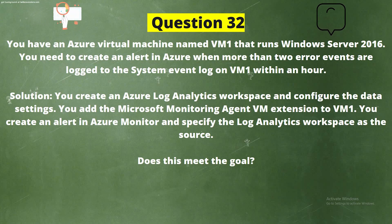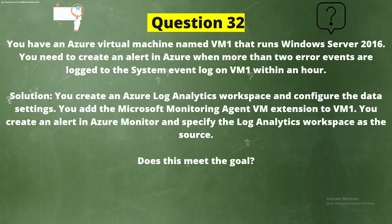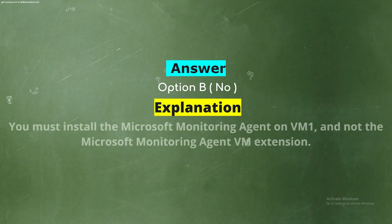Question 32: You have an Azure virtual machine named VM1 that runs Windows Server 2016. You need to create an alert in Azure when more than two error events are logged to the system event log on VM1 within an hour. Solution: You create an Azure Log Analytics workspace and configure the data settings. You add the Microsoft Monitoring Agent VM extension to VM1. You create an alert in Azure Monitor and specify the Log Analytics workspace as the source. Does this meet the goal? Option A: Yes. Option B: No.